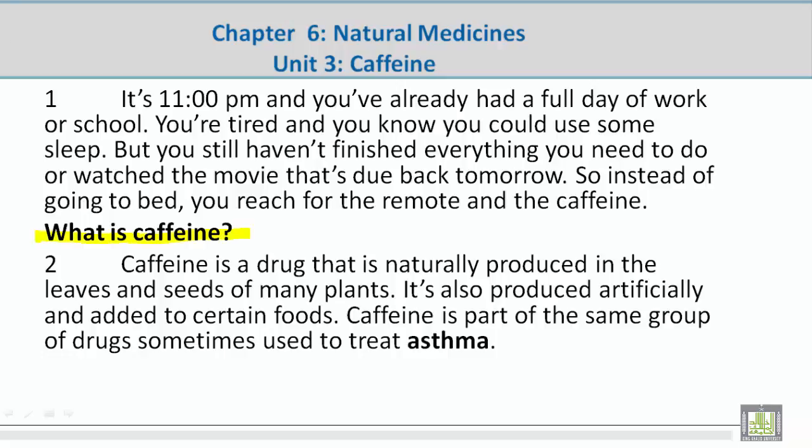What is caffeine? Caffeine is a drug that is naturally produced in the leaves and seeds of many plants. It's also produced artificially and added to certain foods. Caffeine is part of the same group of drugs sometimes used to treat asthma.